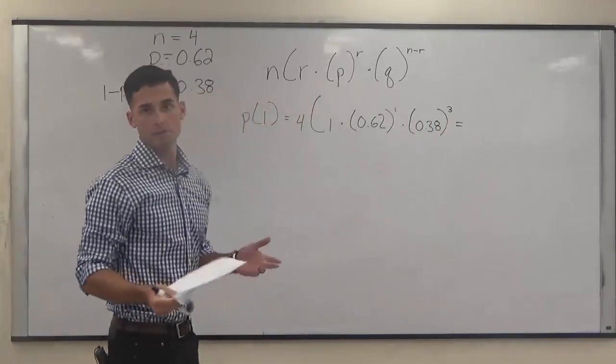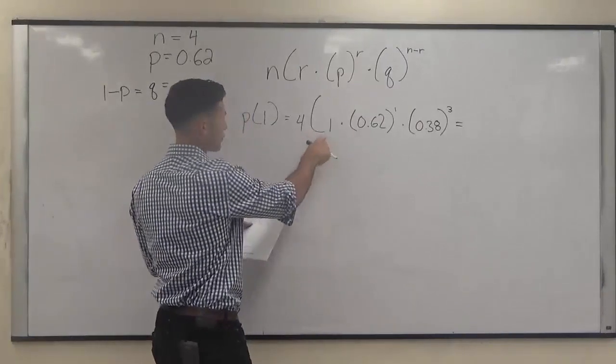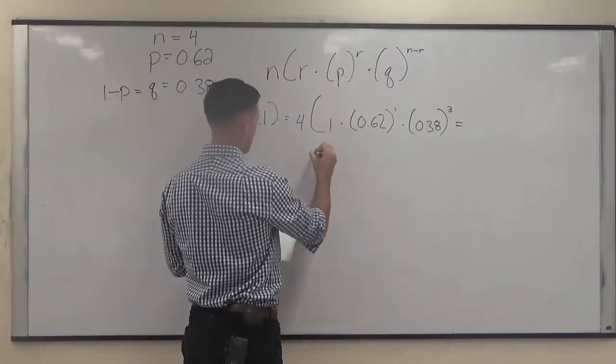For this problem, in simple order of operations, you want to solve each part. So 4 choose 1 on your calculator, 4 combination 1, is just going to give us 4.